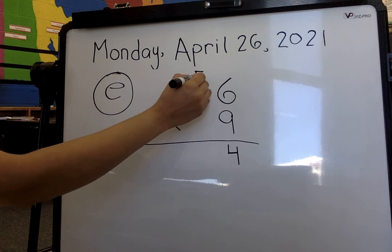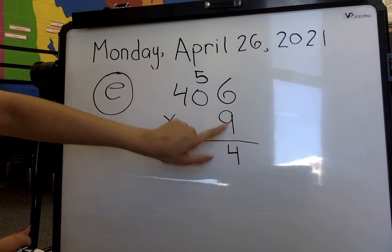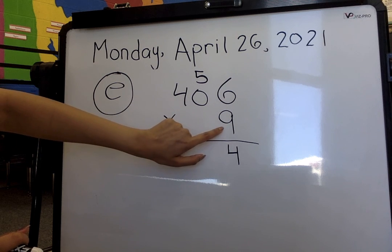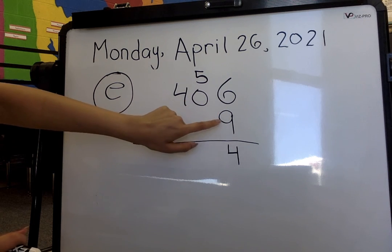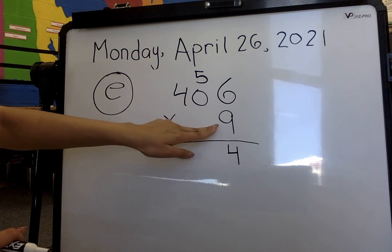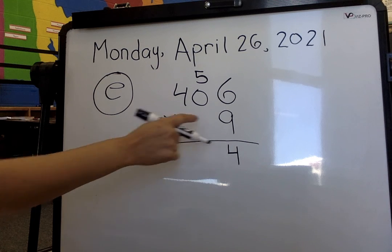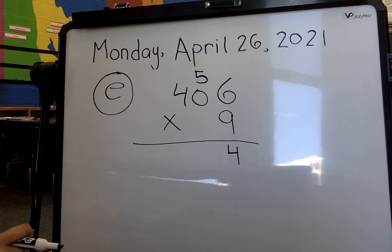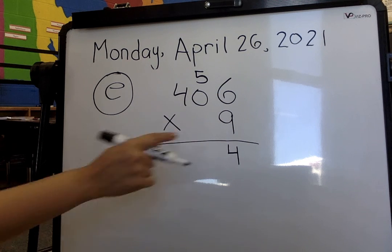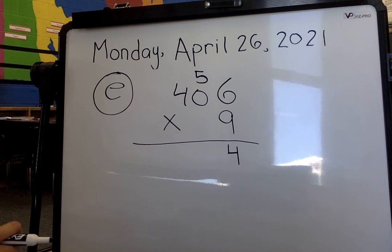So we go ahead and multiply 9 times 6 gives me 54. I write my 4. Remember, I need to multiply my 9 to my 1's, then my 9 to my 10's, and then my 9 to my 100's. We need to make sure we multiply this number to each of the top numbers. So 9 times 6 gives me 54. So I write my 4, I write my 4 at the bottom, and carry my 5 at the top.